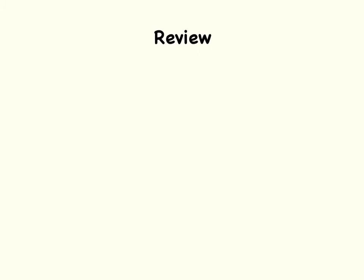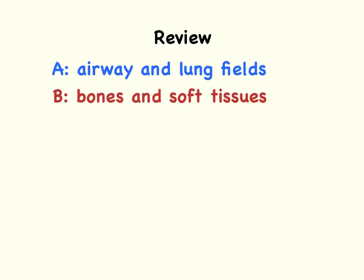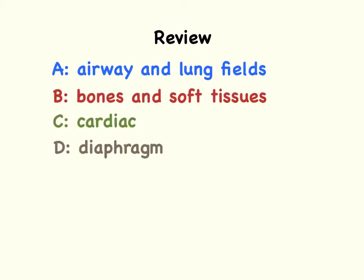In review, there are numerous different methods you could choose to analyze a chest x-ray. I use the ABCDE method: A is for airways and lung fields, B is for bones and soft tissues, C is for cardiac, D is for diaphragm, and E is for everything else.